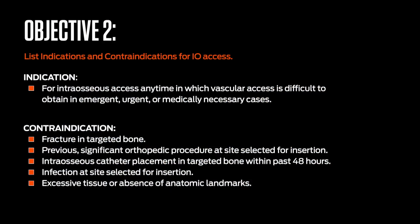IO access is indicated any time in which vascular access is difficult to obtain in emergent, urgent, or medically necessary cases. Contraindications include: fracture in the targeted bone; previous significant orthopedic procedures at the site selected for insertion; interosseous catheter placement in targeted bone within the past 48 hours; infection at the site selected for insertion; or excessive tissue or absence of anatomic landmarks.